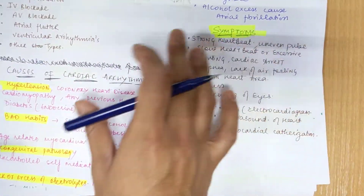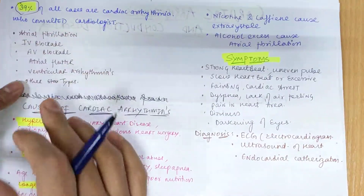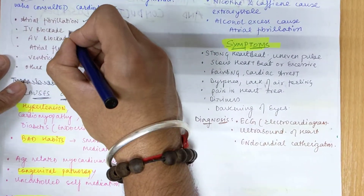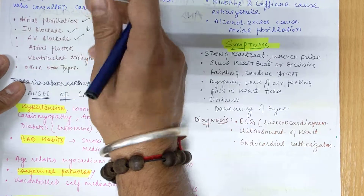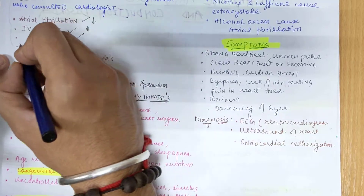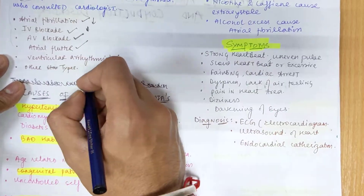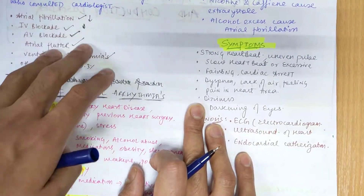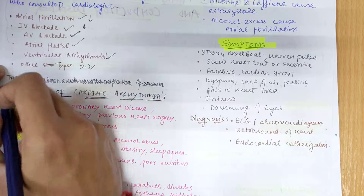Now for some statistics: 39% of all cases seen by cardiologists are cardiac arrhythmias. Among these patients, the most common is atrial fibrillation, followed by intraventricular blockade, AV blockade, atrial flutter, and ventricular arrhythmia. Other types of cardiac pathologies account for about 0.3%. The most common pathology in patients suffering from arrhythmia is atrial fibrillation.